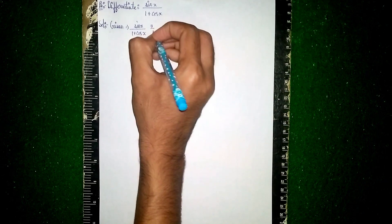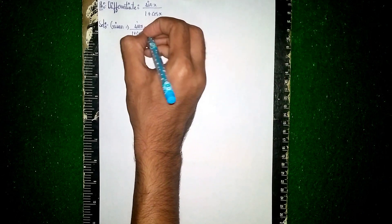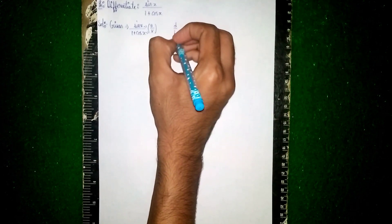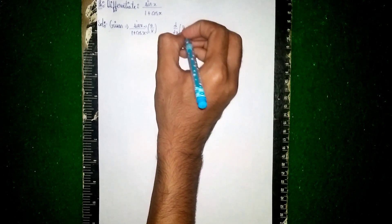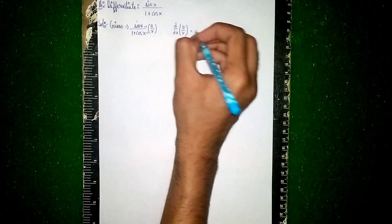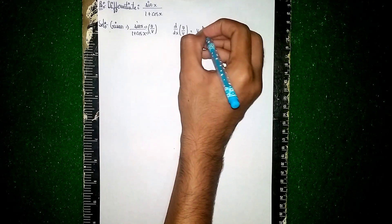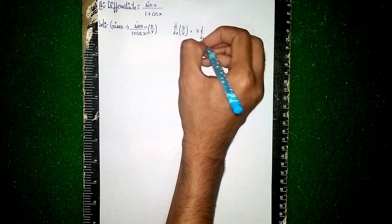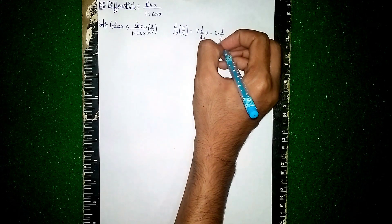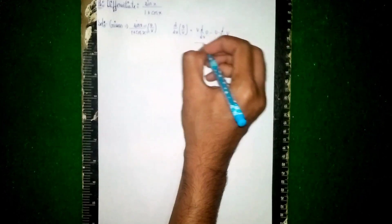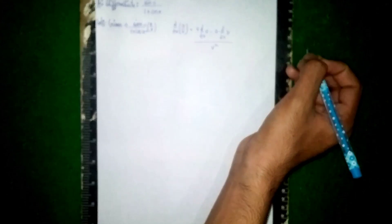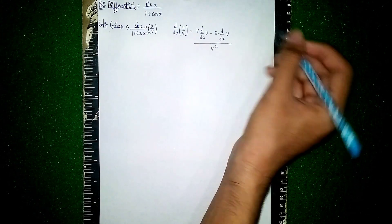I'm using the u/v rule here. This is u and this is v. The differential, d/dx of (u/v), is also called the quotient rule, which is equal to: v · d/dx(u) minus u · d/dx(v), all divided by v².